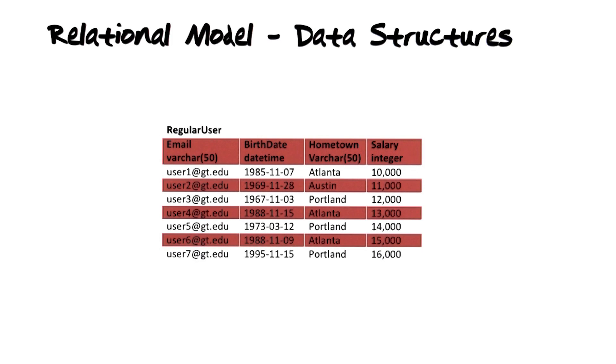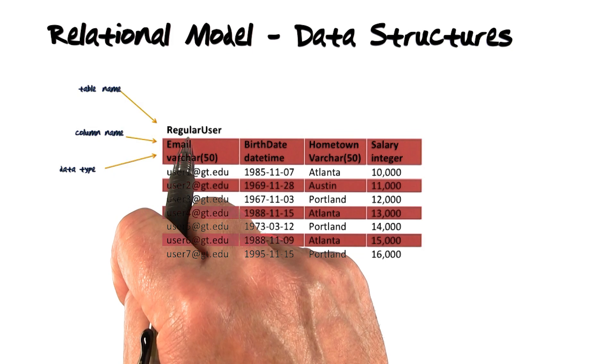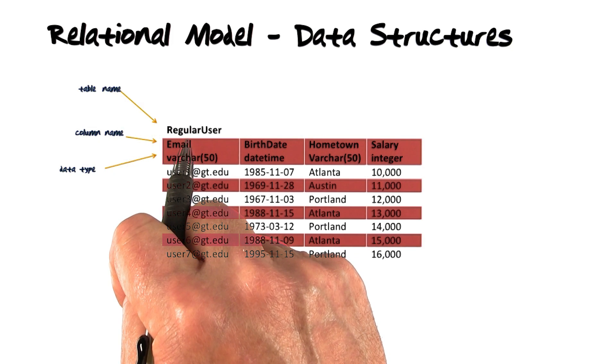In the relational model, data is represented in tables. Tables have names, in this case, regular user.